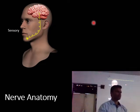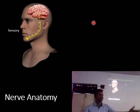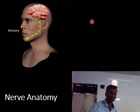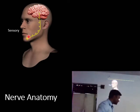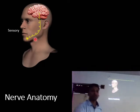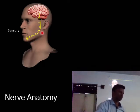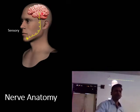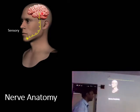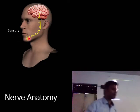The sensory nerves take the impulse from the periphery to the brain. This is a simple diagram showing a multipolar neuron that takes the impulse from the periphery — touch or pain, whatever it is — and carries it to the brain, where the impulse is analyzed and the required action is taken.